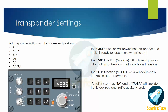Standby will power up the transponder and make it ready for operation. The on function, which is mode A, will send primary information to the radar — that is the SSR code and the position. Next, the ALT function, which is basically mode C, will additionally transmit the altitude information.